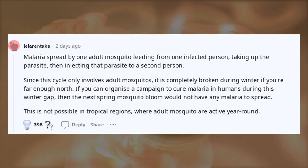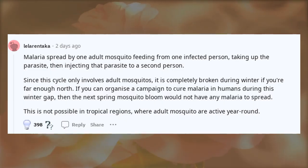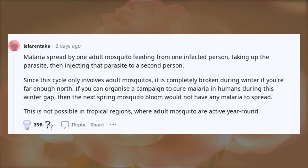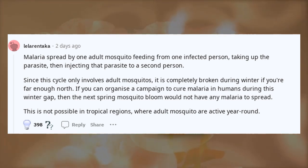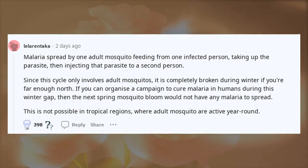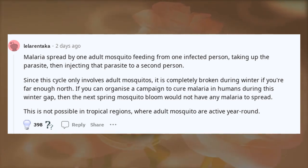Malaria is spread by one adult mosquito feeding from one infected person, taking up the parasite, then injecting that parasite into a second person. Since this cycle only involves adult mosquitoes,